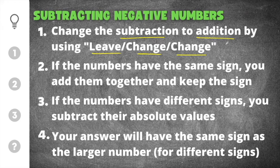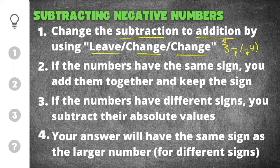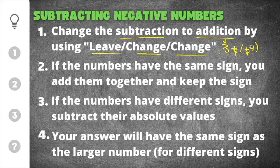For example, if we had three minus negative four, you're going to leave the first part the same — you leave positive three. You change the minus to a plus, and then you change the sign on negative four to positive four. This is why it's called leave change change: you leave the first part the same, you change the sign, and you change the sign on the last number.